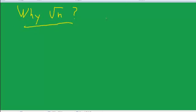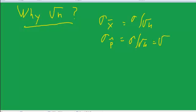We have the standard deviation of x-bar is sigma over the square root of n, and standard deviation of p-hat equals the square root of p times (1 minus p) over n. So why?